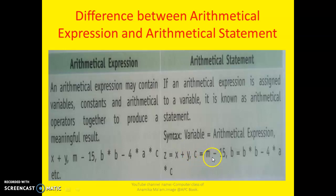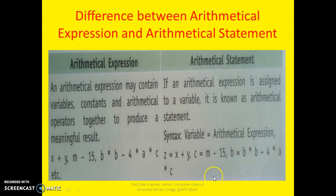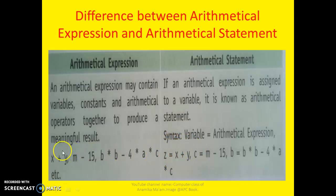So Z equal to N minus 50 is an assignment statement, and N minus 50 alone is called an expression. Similarly, D equal to B into D minus 4 into 2 into 6 — this whole thing is called an assignment statement, and only the right-hand side part is called an expression. So if we want to store somewhere, the whole thing is an assignment statement, and only the right-hand part is the expression.